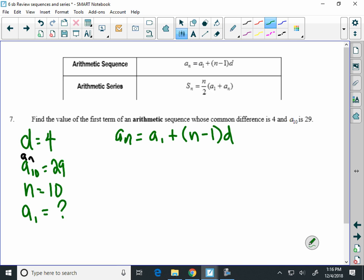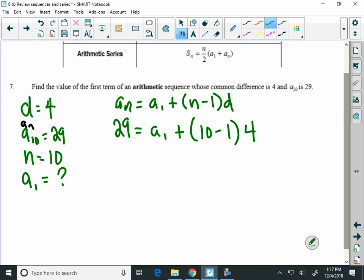When we fill it in, a sub n is the a sub 10, it's 29 equals we don't know what a sub 1 is plus n minus 1 times d which is 4. And then we're going to simplify this.